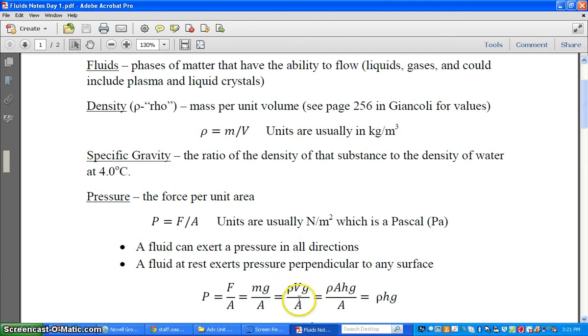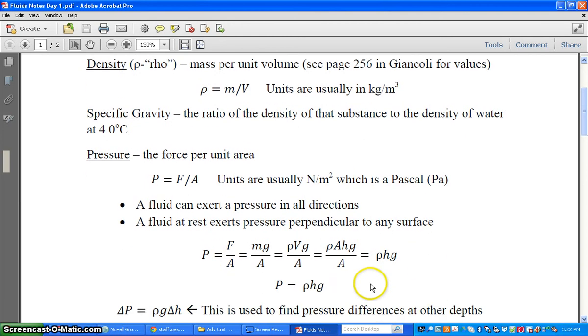One thing that's kind of convenient is the volume of a fluid is really its area times its height. So you can replace that. And now we can get rid of the areas. And we've got another equation for pressure being rho hg or rho gh. Okay? Just like this. Pressure is rho gh.